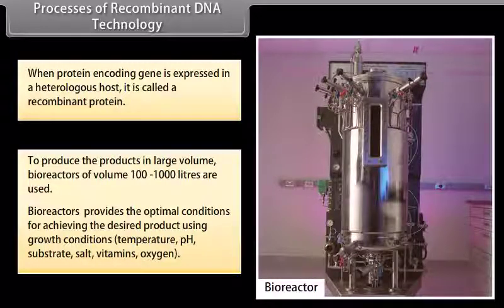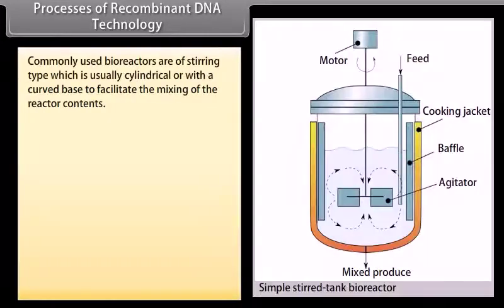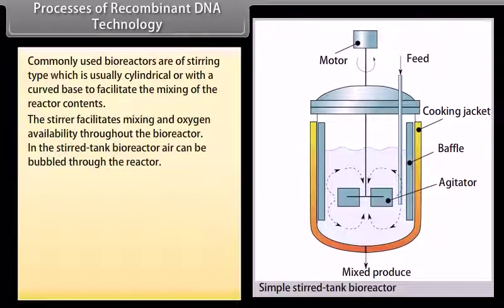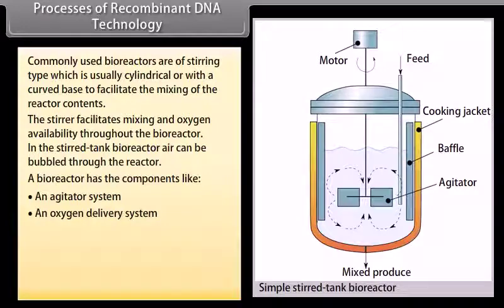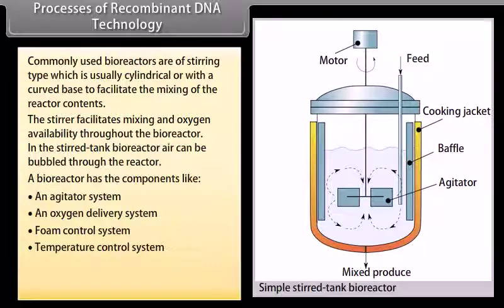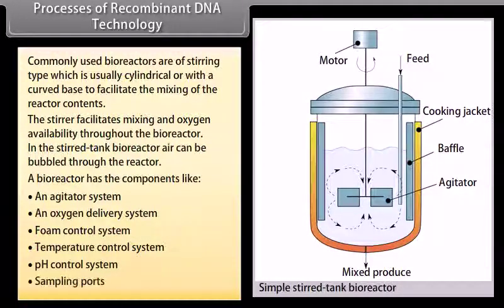Temperature, pH, substrate, salt, vitamins, oxygen. Commonly used bioreactors are of stirring type, which is usually cylindrical or with a curved base to facilitate the mixing of the reactor contents. The stirrer facilitates mixing and oxygen availability throughout the bioreactor. In the stirred tank, bioreactor air can be bubbled through the reactor. A bioreactor has the components like an agitator system, an oxygen delivery system, foam control system, temperature control system, pH control system, sampling ports.